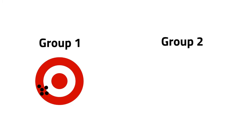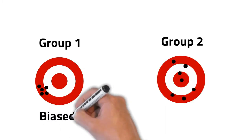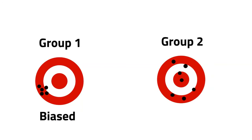Picture this: we have two groups of shooters fighting at two different targets. The first group can be said to be biased — they are systemically deviating, in this case to the left. The second group, on the other hand, can be said to be noisy — they are scattered randomly throughout the target.